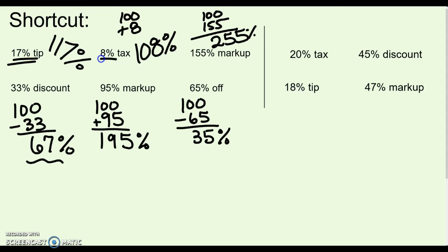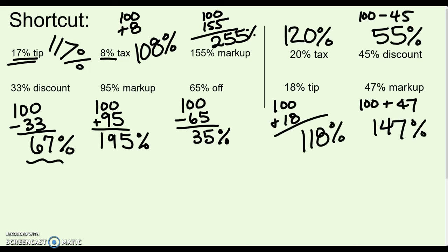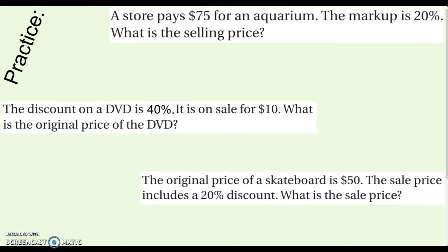Try these practice problems — pause and write down what the overall percent would be for those four. Checking the answers: 20% tax means you're paying 120% of your original bill. 45% off means you're still paying 55% of the original price. Adding an 18% tip gives 118%, and adding a 47% markup gives 147%. You have three practice problems to try — think about the way we set up the examples. You can use the shortcut or not, and we'll go over more of each type together in class.